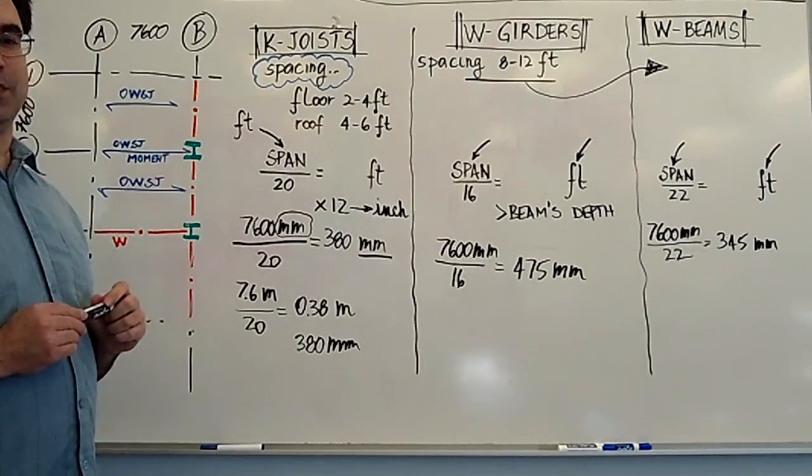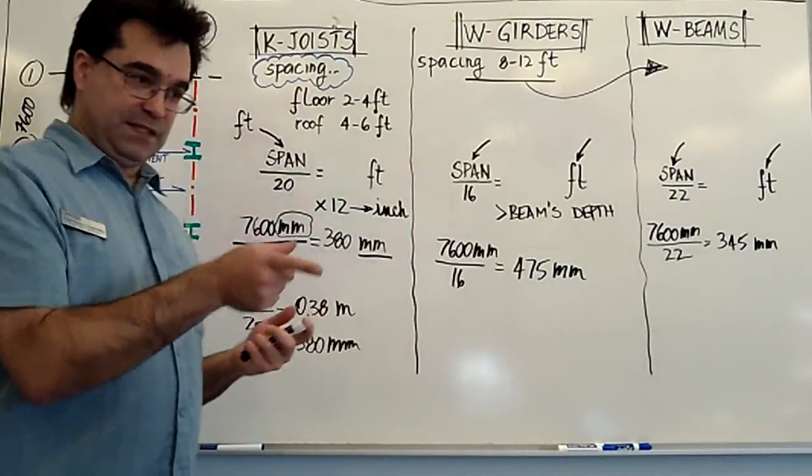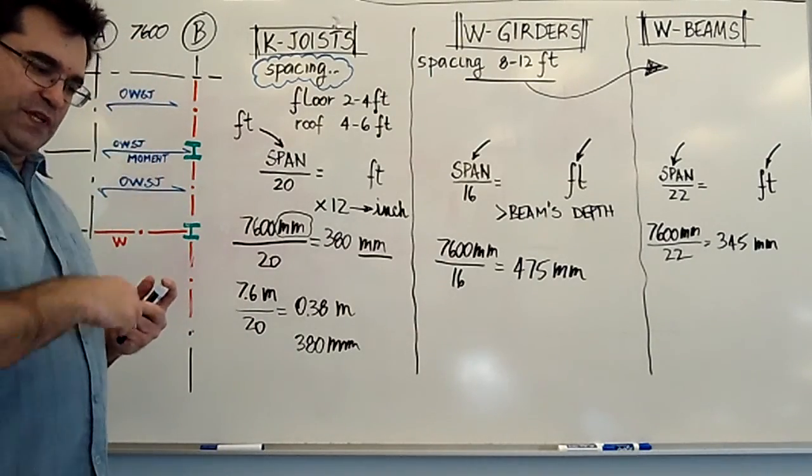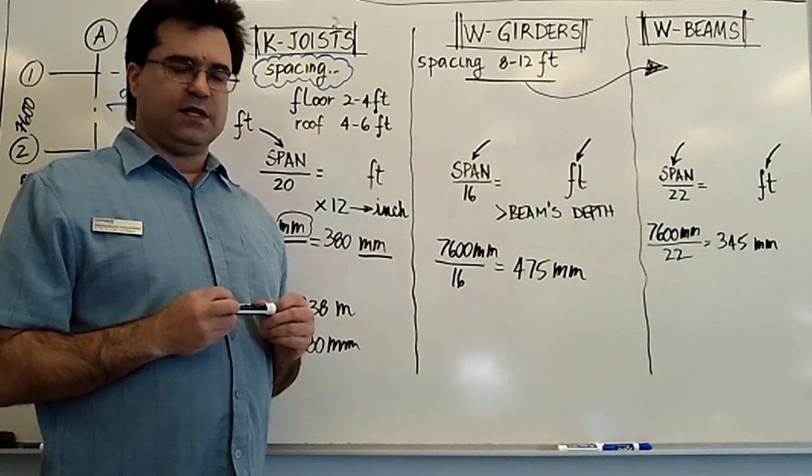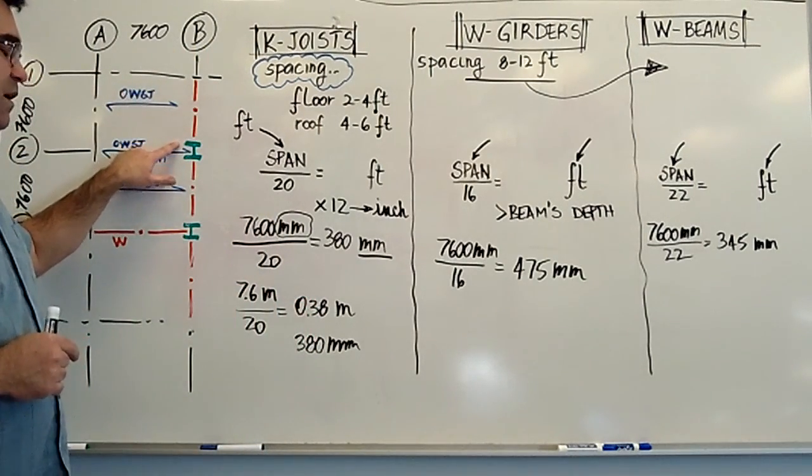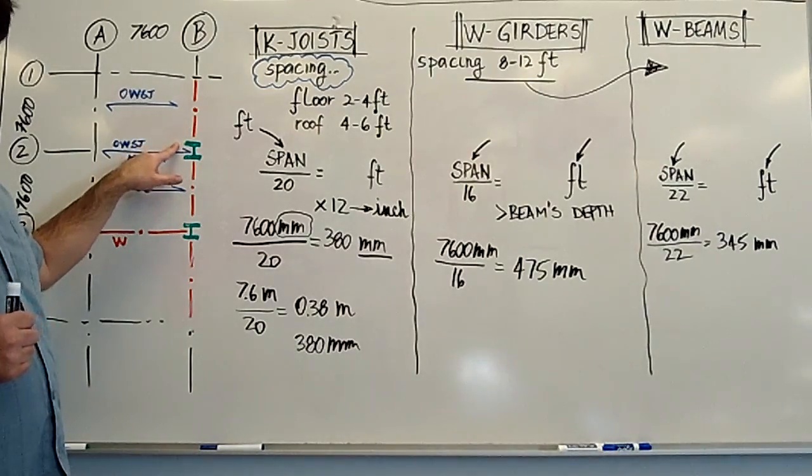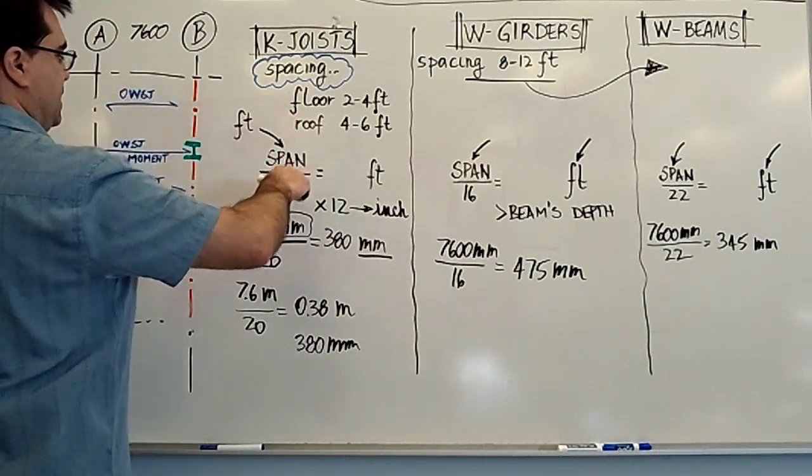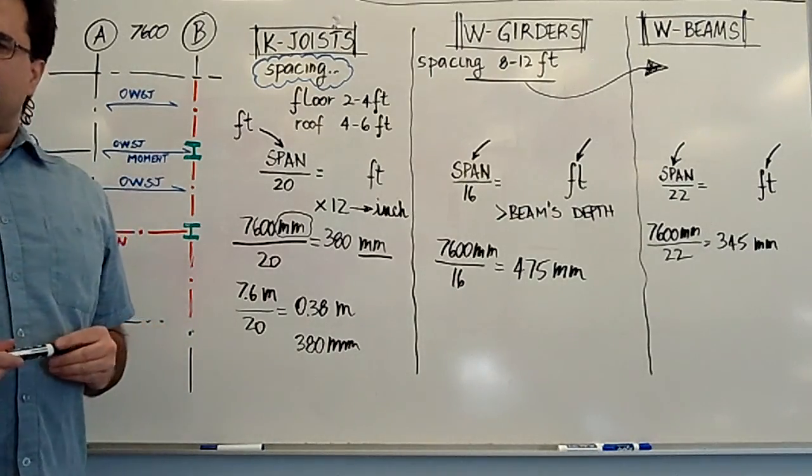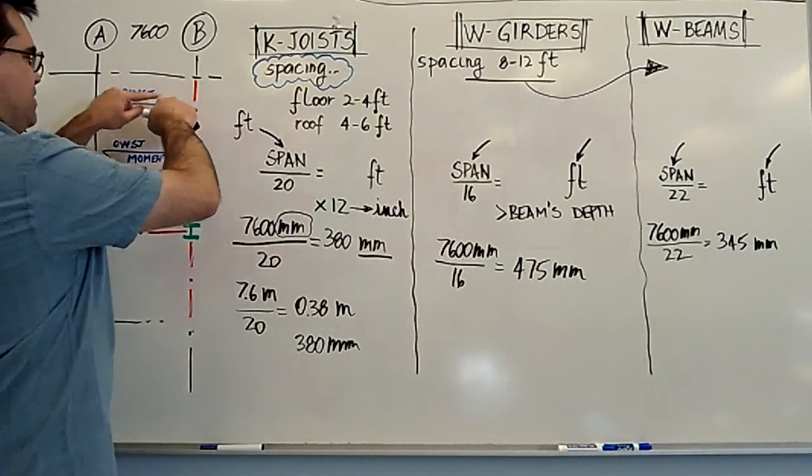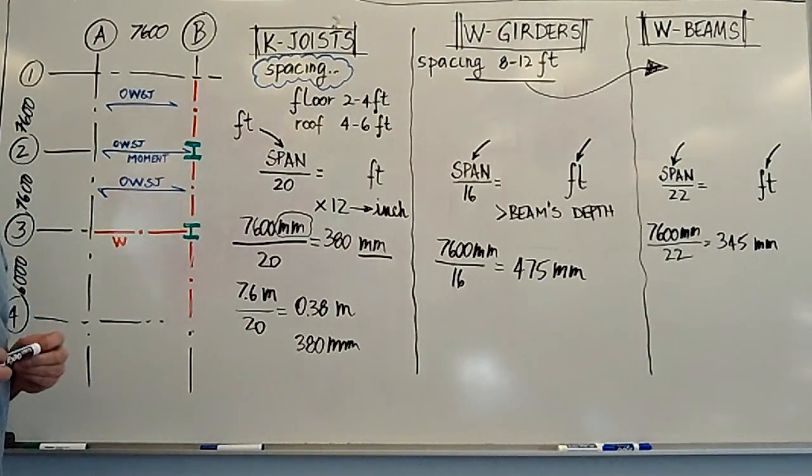Now, if you go and check out on Appendix B at the same location and look further down, you'll also find the rules of thumb for columns. The rules of thumb for columns are based on tributary areas, which I believe you've learned about. It's based on the area that they support. You can have a look at it. It's a good way to do it. If it gives an area, then you pick a certain size of W sections for your columns.